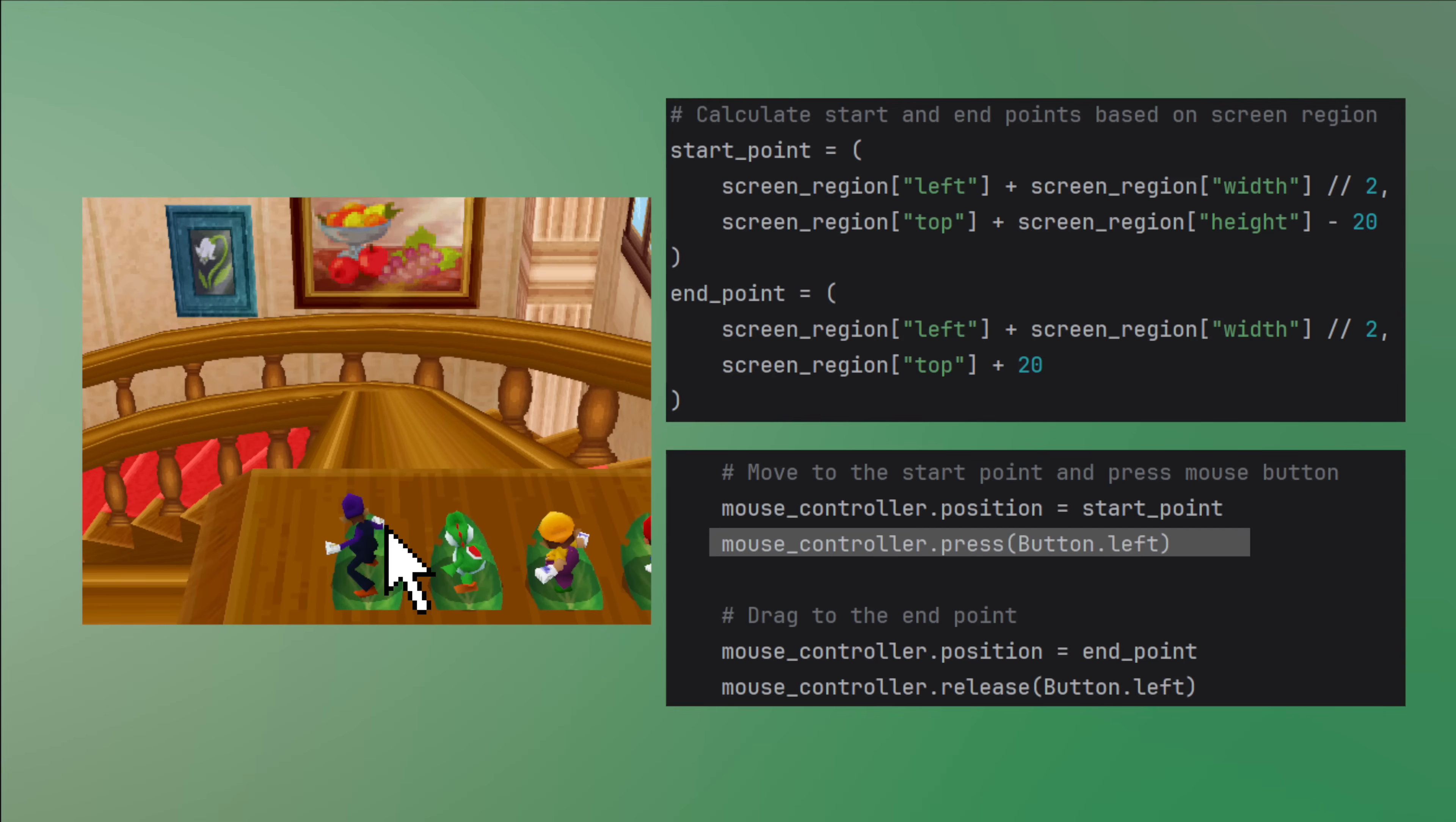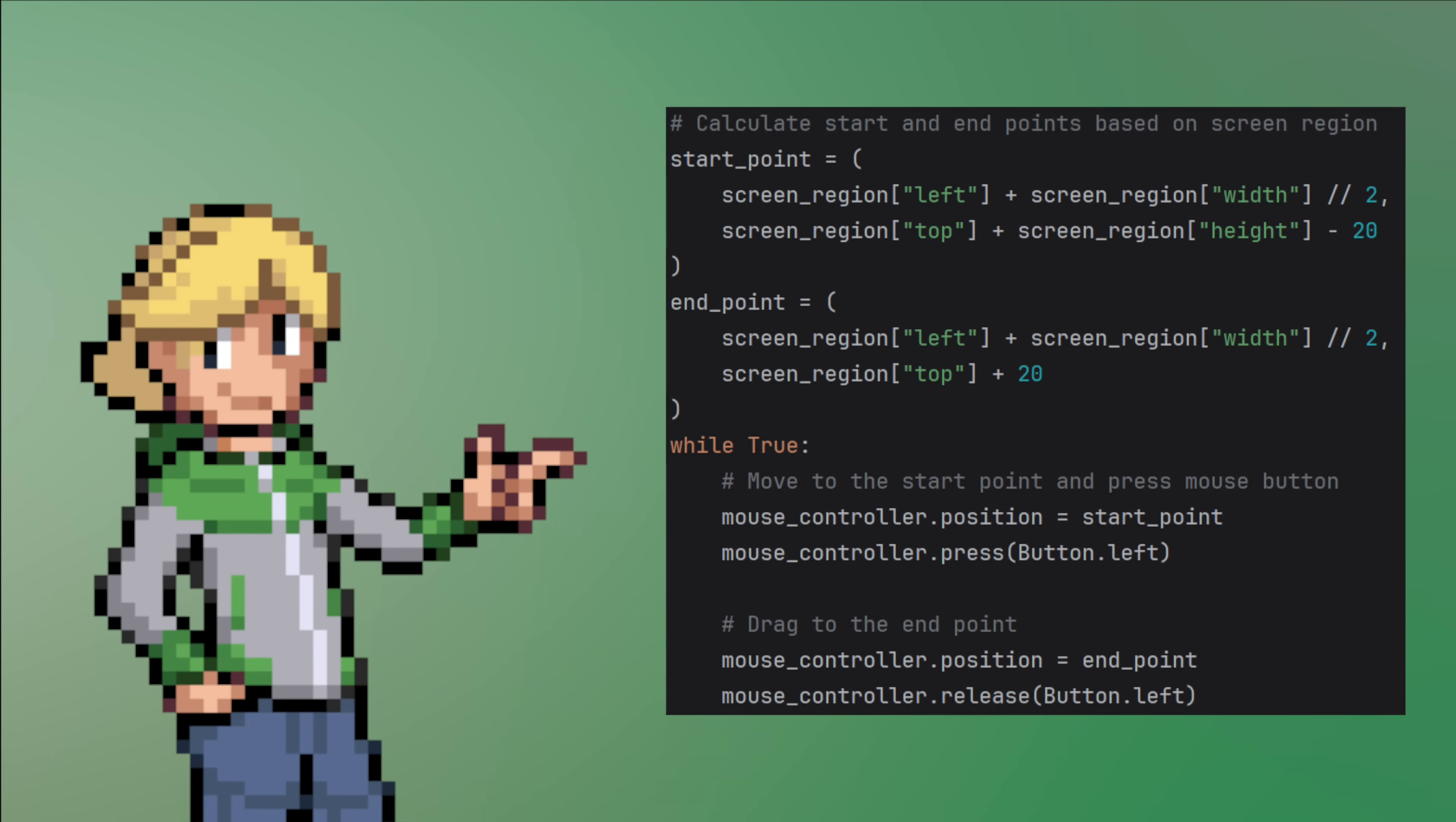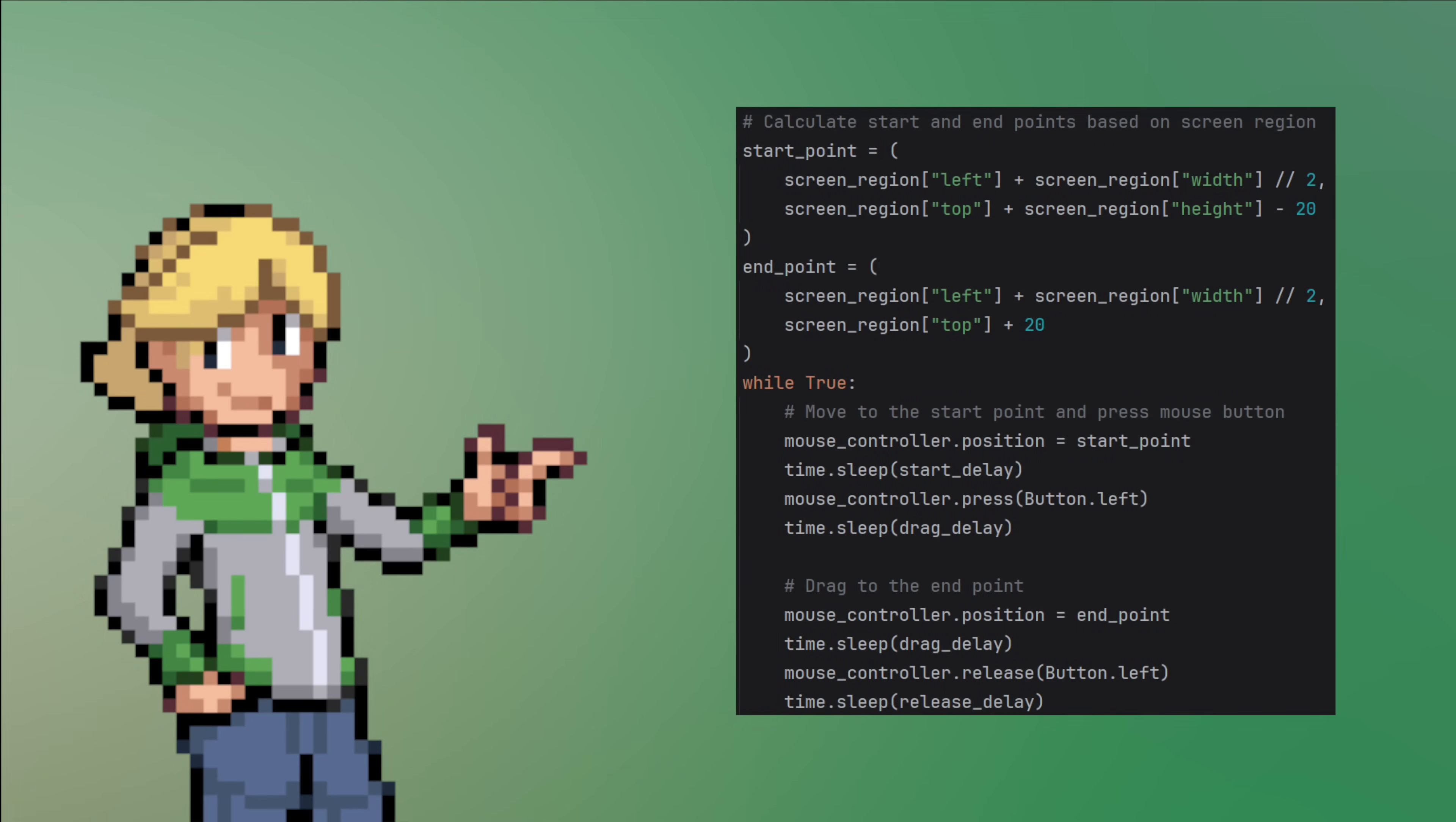Next with the button still held down the mouse has to be moved up to complete the dragging motion. This needs to be done in a loop of course. With each iteration this set of actions is repeated and that's pretty much all we need. Actually that's a lie. This code would run way too fast for the game to register and after almost every action a small delay of a few milliseconds is required. But after adding that we are ready to give it a try.